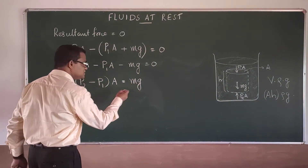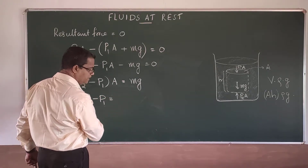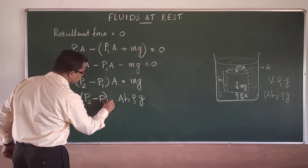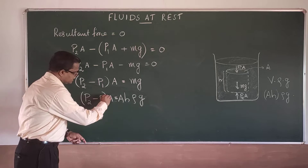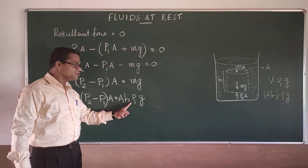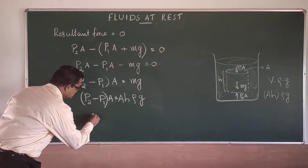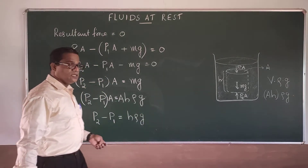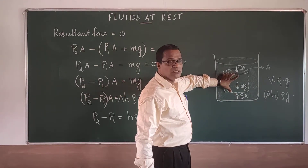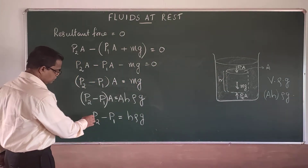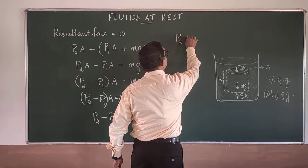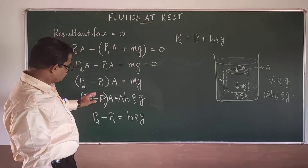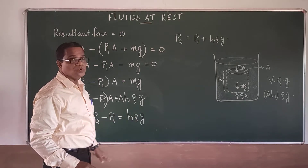The pressure difference between these two points is equal to H·ρ·g. So effectively, the pressure due to a column of liquid of height H is equal to H·ρ·g.